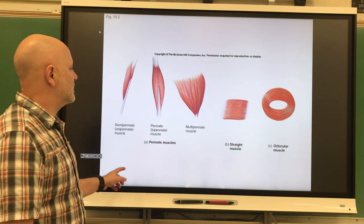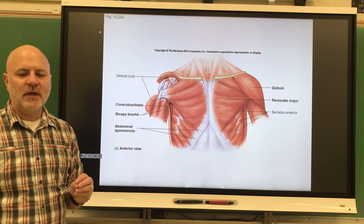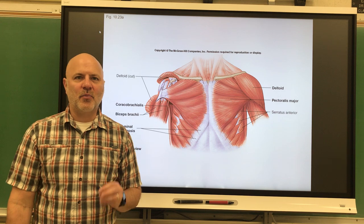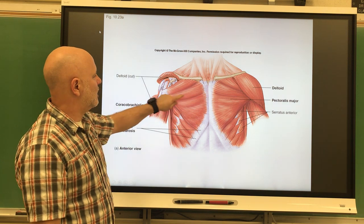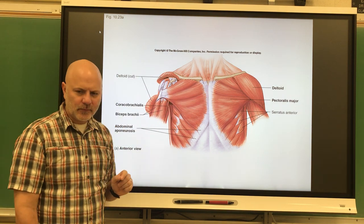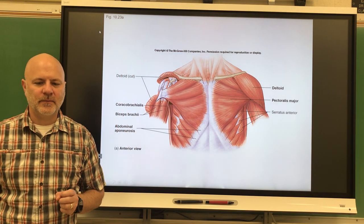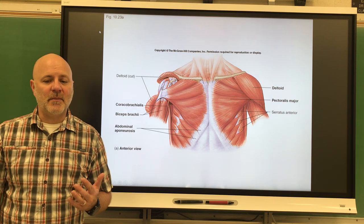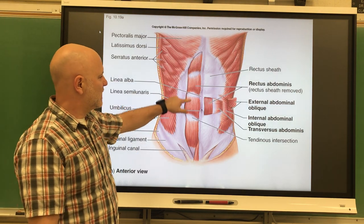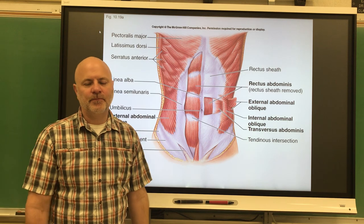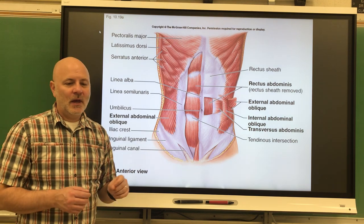Next is convergent. The pectoralis major here is showing a convergent. This is where a muscle has a broad origin and its fascicles converge on a single tendon or insertion. So broad origin here, single insertion. The pectoralis major is an example of one showing convergent. Next is straight or parallel. This is a muscle in which the fascicles run parallel to the axis of the muscle. We see this with the rectus abdominis, so all those fibers are moving in the same direction there.